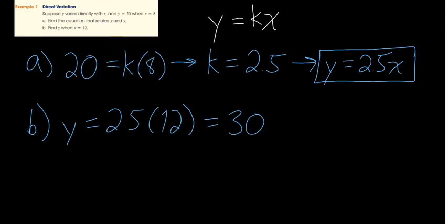The model y equals kx is a linear equation, but direct variation equations will not always be linear. Linear means a first-degree polynomial — x is raised to the first power. For example, if y varies directly with the cube of x, then the equation will be y equals k times x cubed. So now suppose y varies directly with the cube of x — we write y equals k times x cubed.